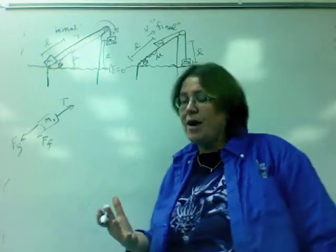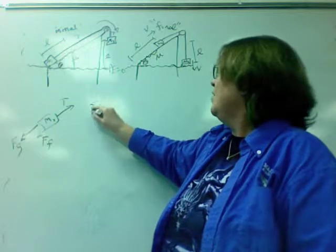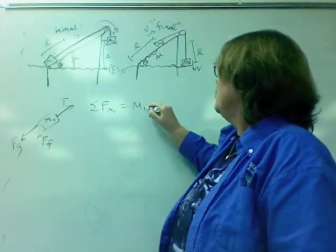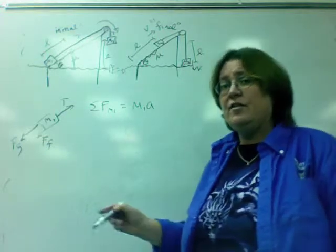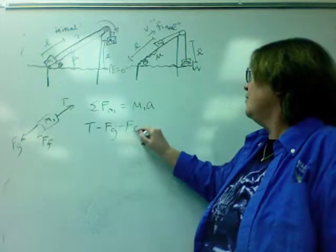Now how much gravity, how much friction? Remember they're on an incline. But nonetheless, the sum of all the forces acting on M1 is going to result in M1's acceleration. Now those forces are tension, minus gravity, minus friction.